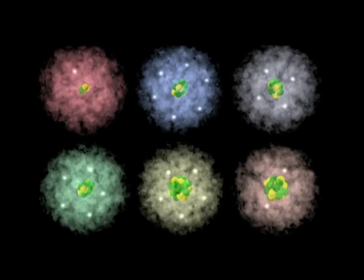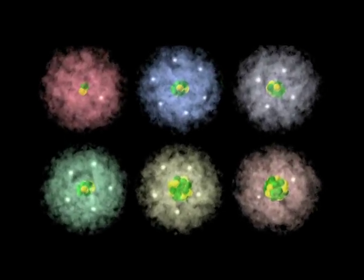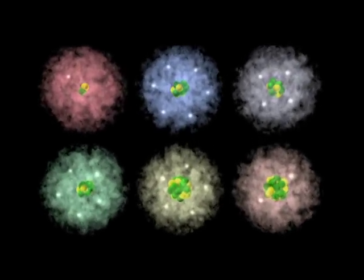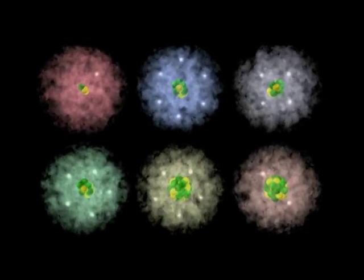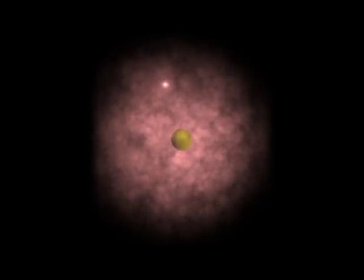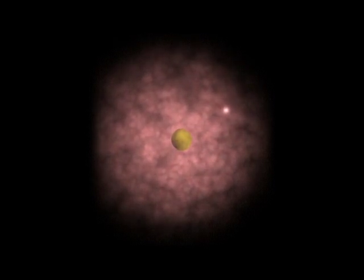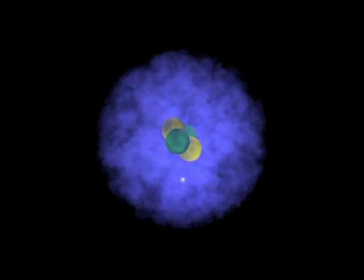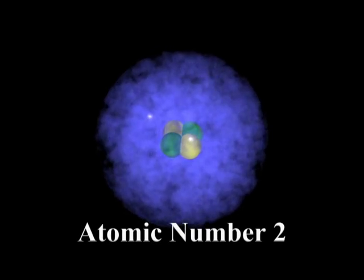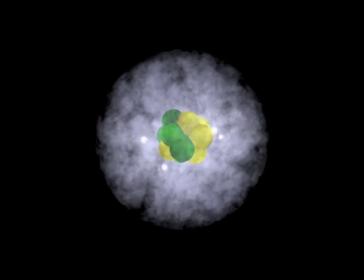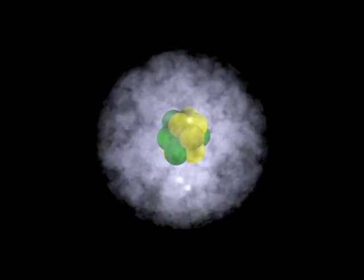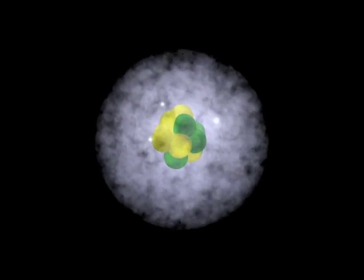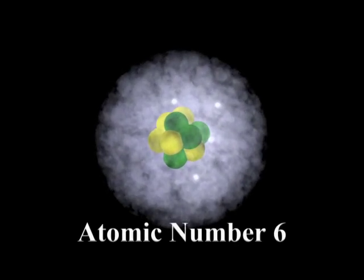Every element has a unique atomic number. The atomic number of an element corresponds to the number of protons found in the nuclei of its atoms. For example, hydrogen atoms have one proton and an atomic number of one; helium atoms have two protons and an atomic number of two; while carbon atoms, which form the atomic skeleton of all the larger molecules found in living organisms, have six protons in their nucleus, giving them an atomic number of six.